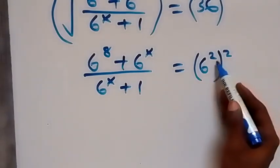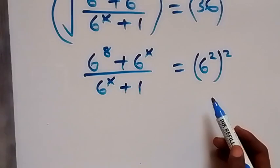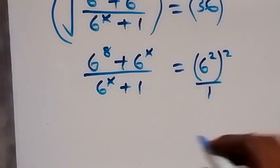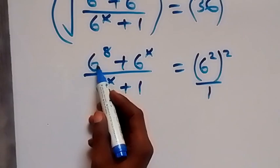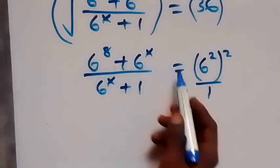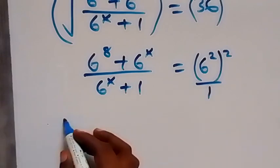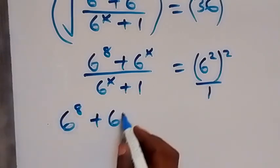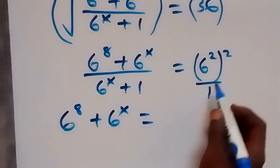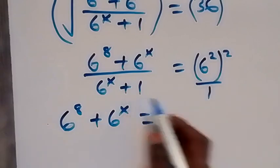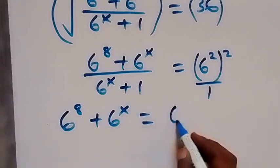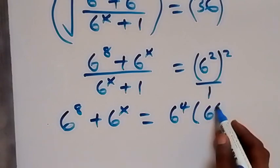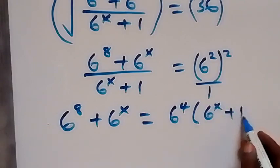This power we multiply — that will be 6 raised to power 4. Then we can cross multiply. This is over 1, so when we cross multiply we have 6 raised to power 8 plus 6 raised to power x times 1, which is the same as 6 raised to power 8 plus 6 raised to power x, equal to 6 raised to power 4 multiplied by 6 raised to power x plus 1.